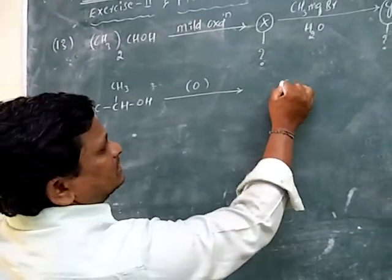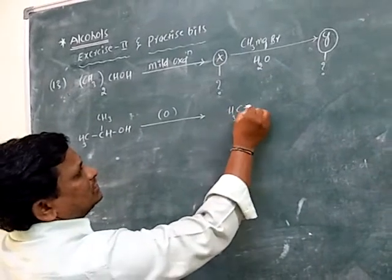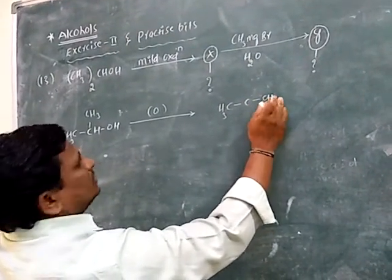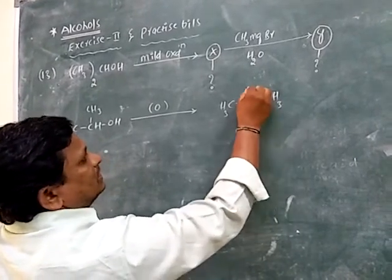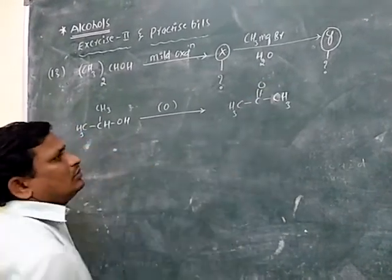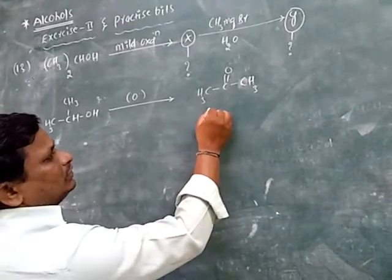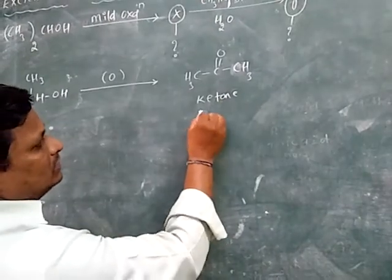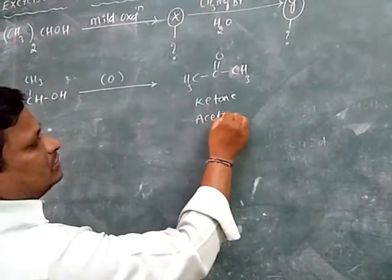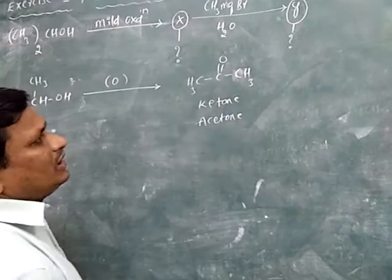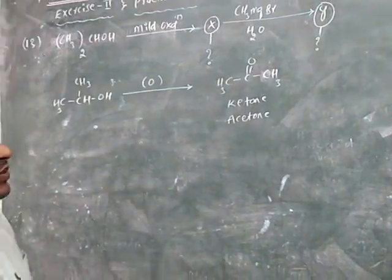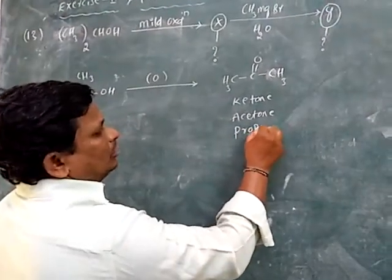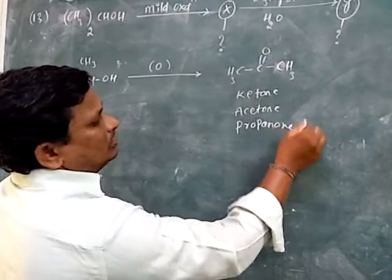After the reaction, the compound obtained is a ketone. So X is the ketone. Its common name is acetone, and its IUPAC name is propanone.